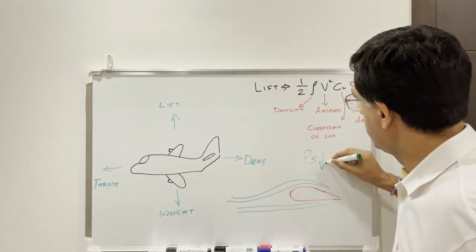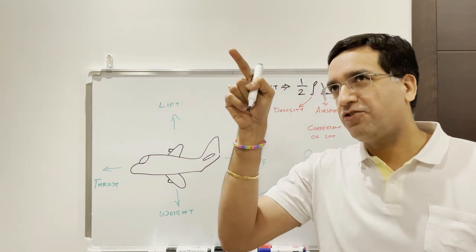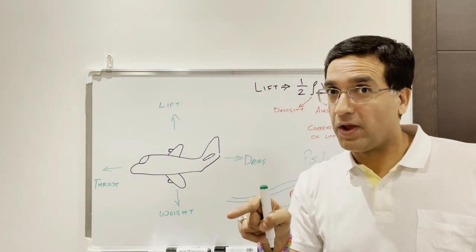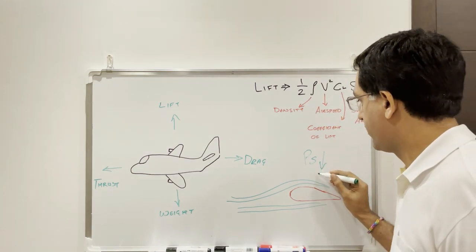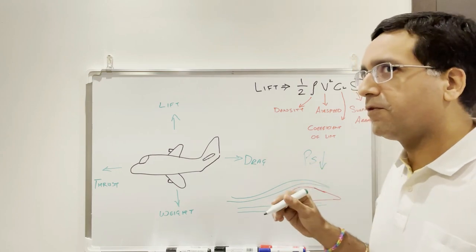Now as the static pressure drops, it's creating a differential pressure when we compare the pressure on the top to the pressure on the bottom of the wing. So you've got a lower pressure here compared to the bottom of the wing. Now when we have this differential pressure...